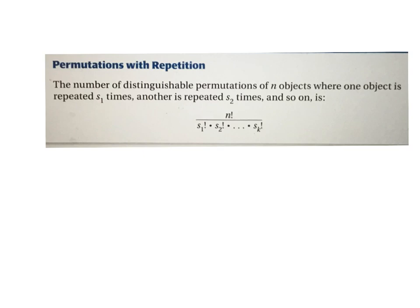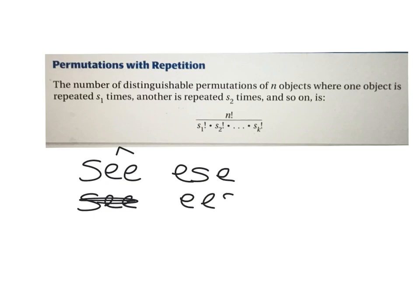One last thing: permutations with repetition. If you have letters that repeat, the order wouldn't truly change when you swap identical letters. For example, the word 'scene' - if you just switch the two E's it still looks exactly the same, so that doesn't count as a new arrangement. The formula: put the total number of letters in the numerator, and in the denominator you put the factorial of how many times each repeated letter appears. Each repeated element gets its own factorial in the denominator.